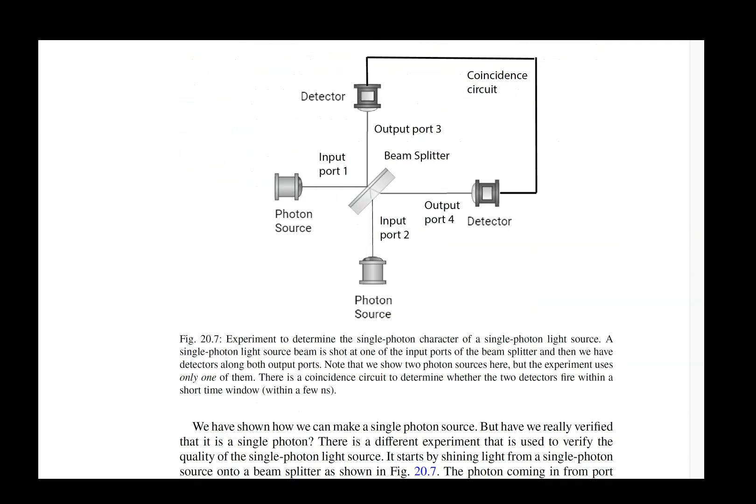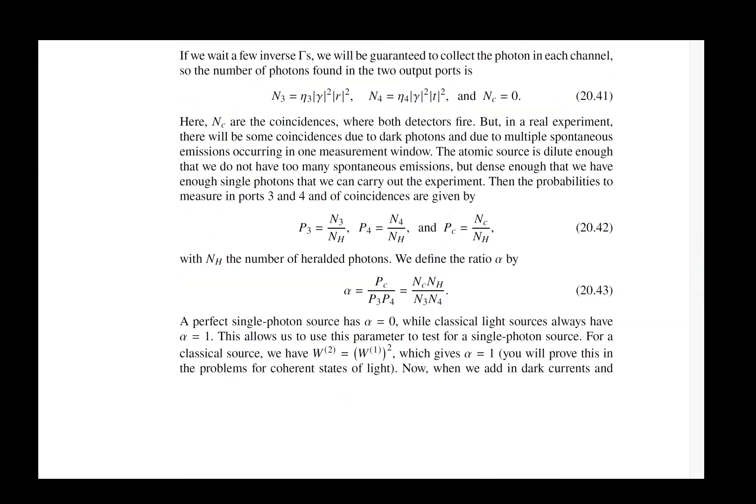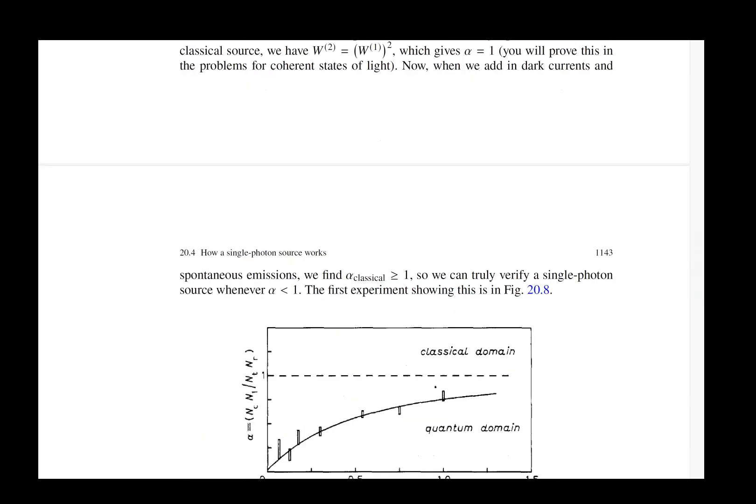Then we look at another experiment that looks at the fact that you can measure a photon once and only once. You put it on a beam splitter and you never see both detectors go off. It's always one detector or the other. This is a classic experiment that looks at measuring photons.